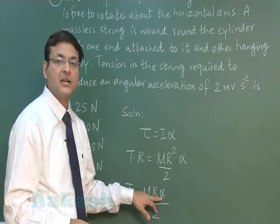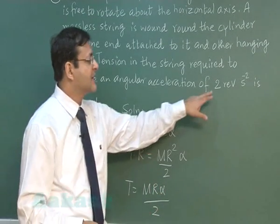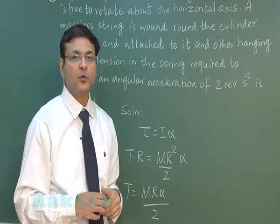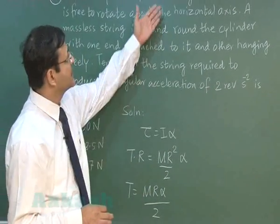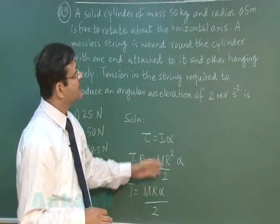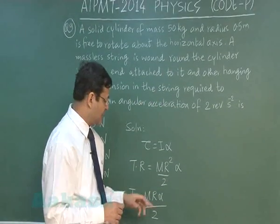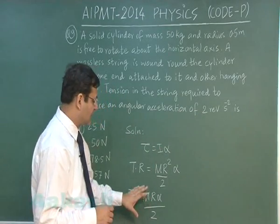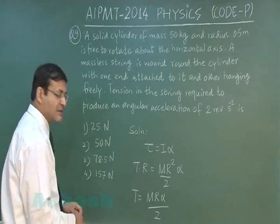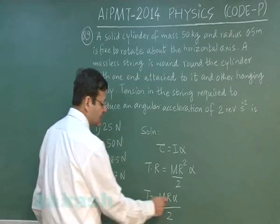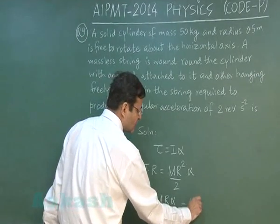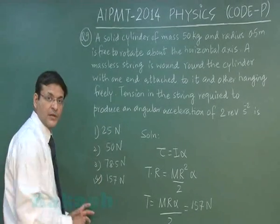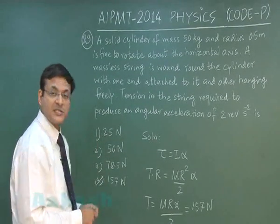The angular acceleration is given as 2 revolutions per second squared, which must be converted to radians by multiplying by 2π, giving 4π. With mass 50 kg and radius 0.5 m, substituting alpha as 4π — not 2, which is a common mistake — the tension comes out to 157 newton. The correct option is the fourth one.